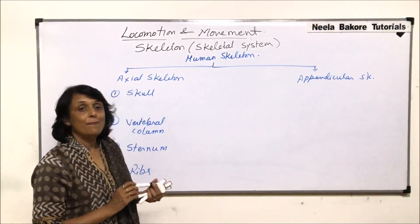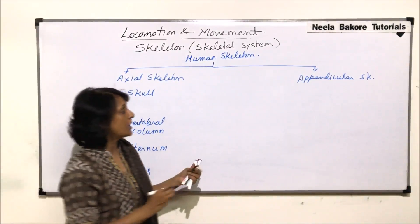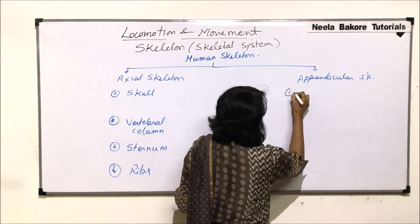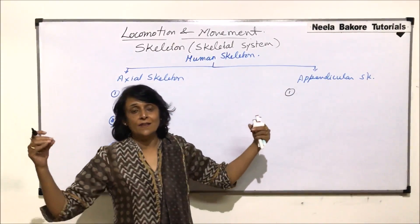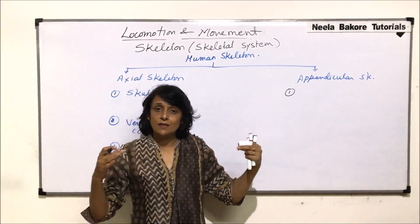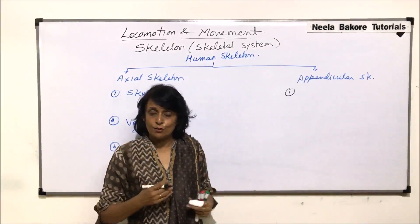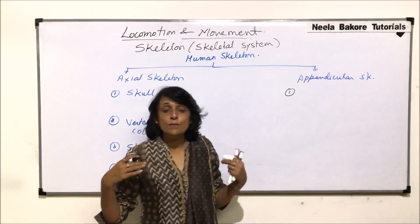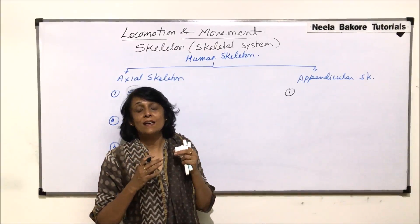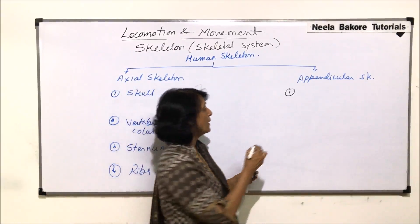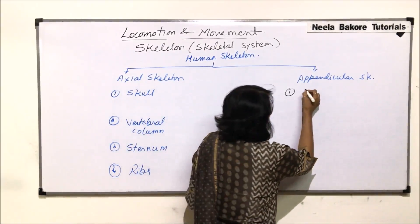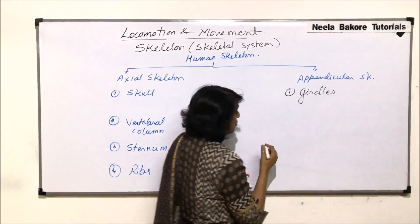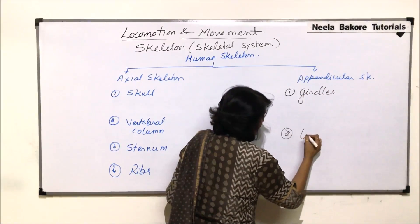The appendicular skeleton includes the things which are attached to the median skeleton from the lateral side. For attachment of the limbs, there are girdles — pectoral and pelvic girdles. So girdles and limbs are included in the appendicular skeleton.